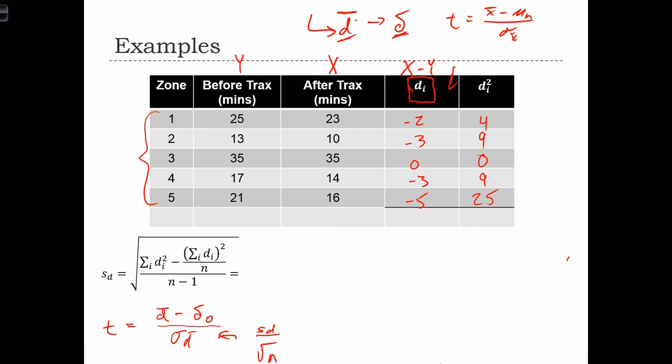So now we can compute the standard deviation of this distance variable. We can do it in the normal way, but let's use this equation instead, which is the shortcut equation. The sum of di squared is the sum of this column over here, which is 47. So we have 47, and now we need to have the sum of di all squared. So that's the sum of this column, and after we've added the column up, we're going to square it. So 169 over 5, all over n minus 1, right? So all over 4, and the square root is of the entire fraction. This is equal to the square root of 13.2 over 4, which equals 1.82.